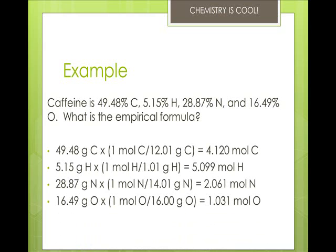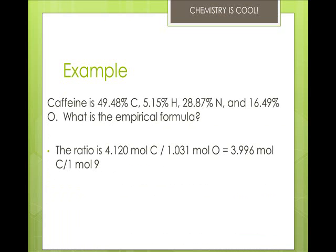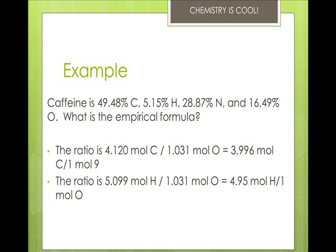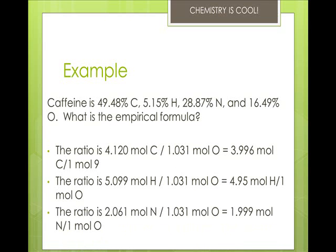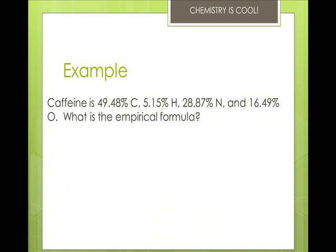So what we do is we find the lowest whole number ratio by dividing everything by the smallest number of moles. So in this case, it's going to be the moles of oxygen because you want whole number multiples. So we take that carbon and divide it by the moles of oxygen, and we get approximately 4. Hydrogen to oxygen gives us 5, and nitrogen to oxygen gives us 2. So our empirical formula is C4H5N2O.